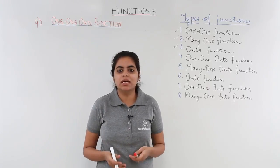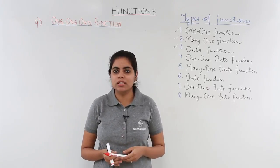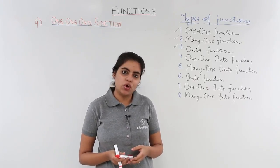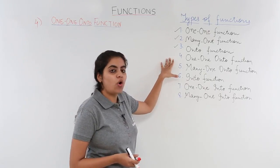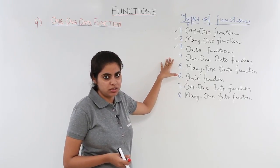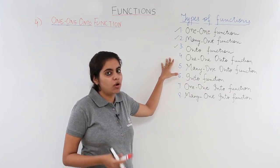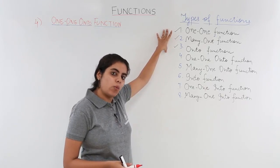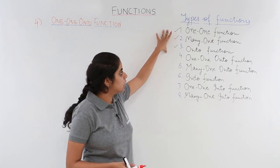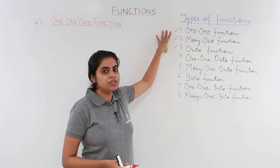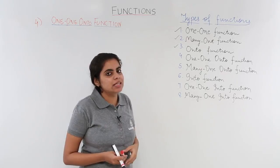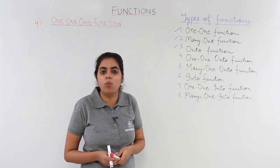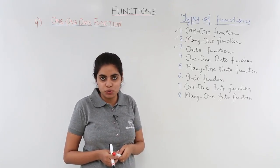In this video we will be seeing the fourth type of function called a one-one onto function. We have already studied three types of functions: one-one function, many-one function, and onto function. Now let's get going with the fourth type, one-one onto function.